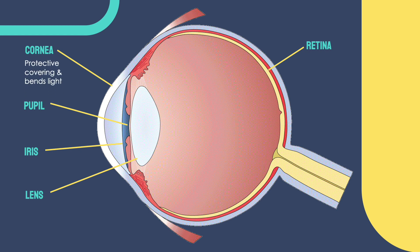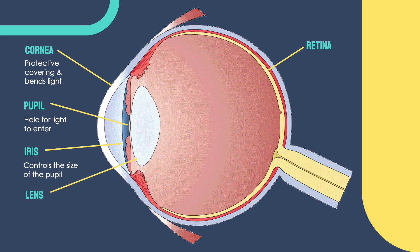The cornea is the clear outer layer that acts as a protective covering and bends light. The pupil is the black dot in the middle of our eyes — it is a hole that allows light to travel into the eyeball. The iris is the colored area of the eye around the pupil, and it controls the size of the pupil, thus controlling how much light can enter.